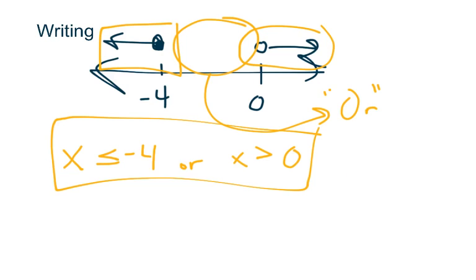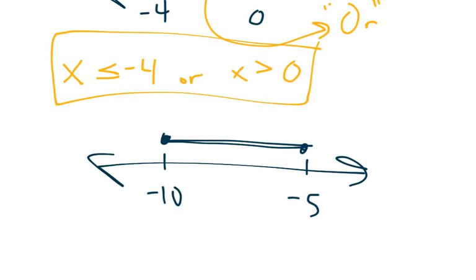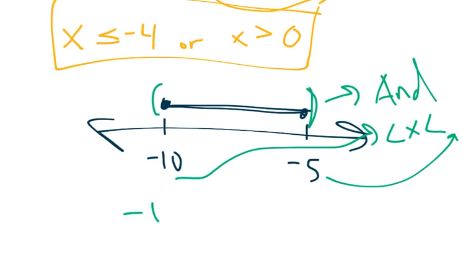Similarly, if you have a bounded graph — say closed circles at negative ten and negative five connected by a line — since it's bounded, this corresponds to an 'and' inequality with the format: number ≤ x ≤ number. So you get negative ten ≤ x ≤ negative five. With 'and' inequalities, you use the two less-thans with x in the middle and check whether the circles are open or closed.